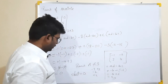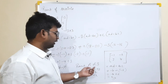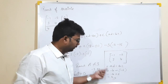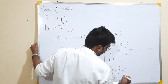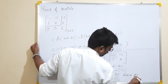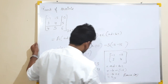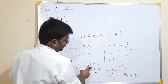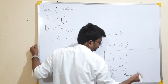That's the value of this. The rank of A matrix is 2.